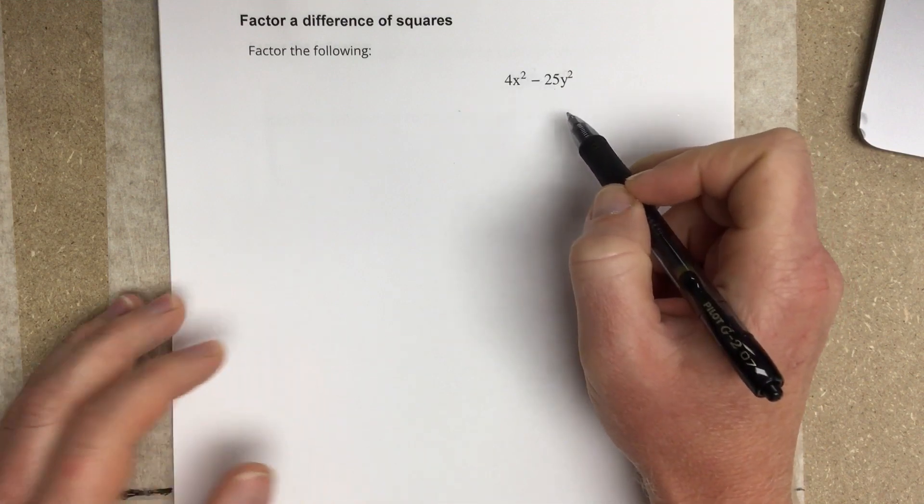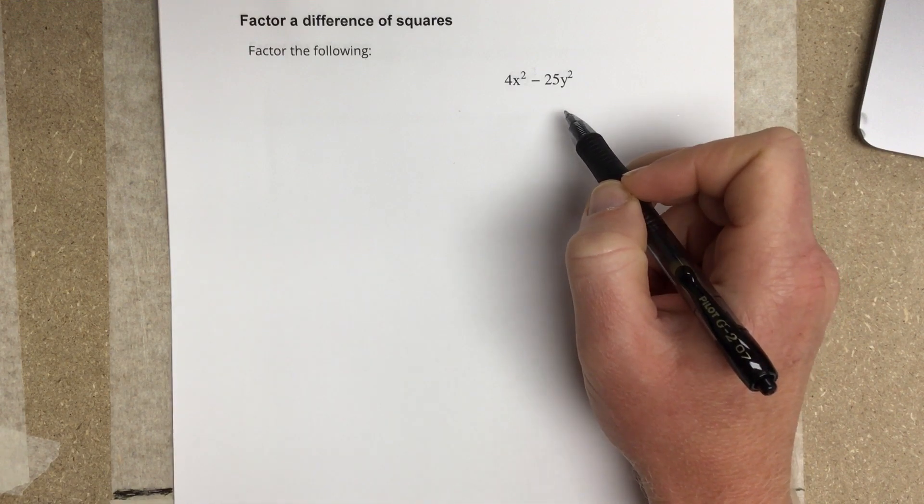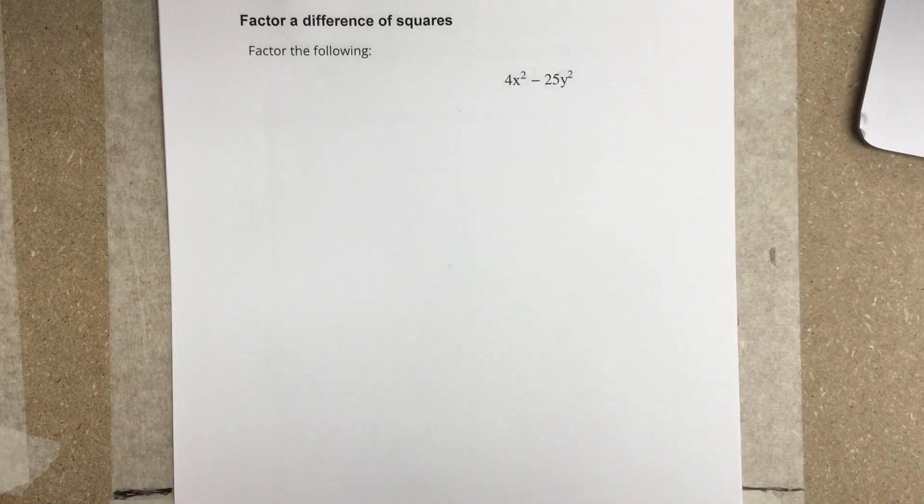So if there's no middle term, technically we have one binomial times its conjugate, because that's how the middle term gets canceled. And we saw that in previous sections.